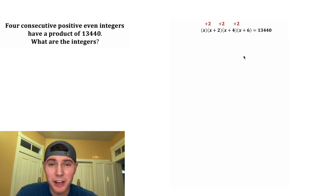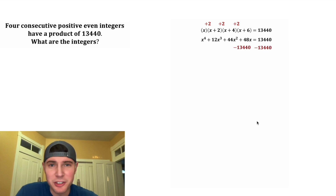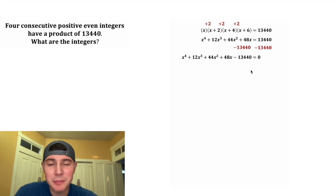If we multiply all these out it's going to take a while, giving us a large polynomial. Then we subtract 13,440 from both sides and get everything equal to zero. This can be solved but it'll take quite a bit of work.